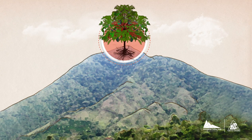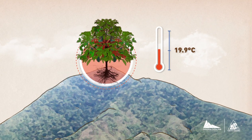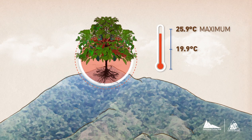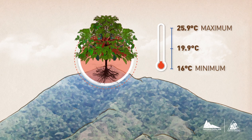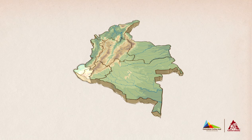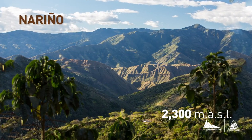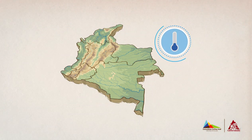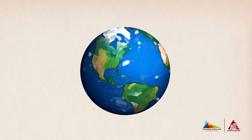These elements, and the region's steep topography and canyons, make it possible for the coffee bush to grow at higher altitudes, with temperatures averaging 19.9 degrees Celsius, with average maximum values of 25.9 degrees Celsius and minimum of 16 degrees Celsius. These different factors explain why Nariño's coffee is produced at heights reaching up to 2,300 meters above sea level, in areas that present lower average temperatures compared with most coffee-growing zones worldwide.